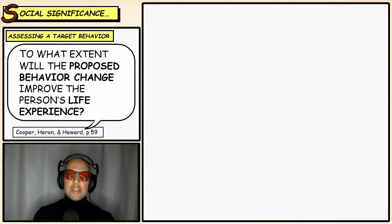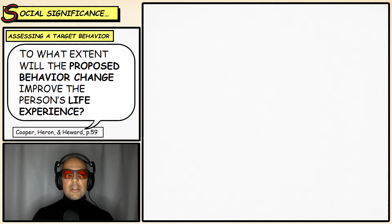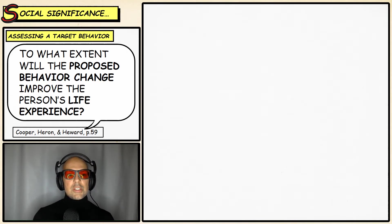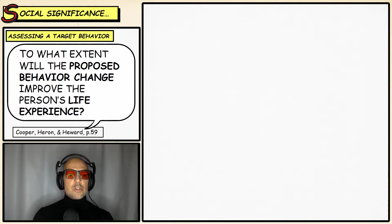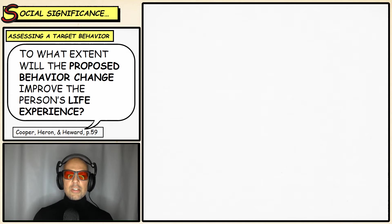Once we've made the decision to target socially significant behaviors, the question becomes: how do we identify those behaviors that are most socially significant? When we assess a target behavior for social significance, as Cooper, Heron, and Heward mentioned, we're looking at to what extent will that proposed behavior change improve the person's life experience. That is the major question we're asking for social significance.